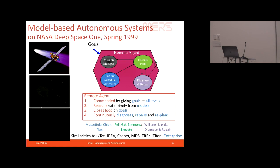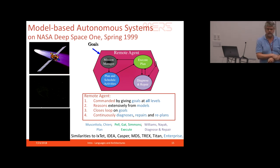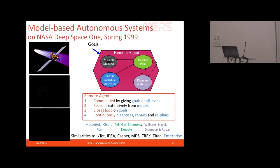Remote Agent used extensive formal models and closed the loop on goals, continuing to diagnose and repair. It ran on only 20 MHz of processor, with 2 MHz for diagnosis and about 40% for the planner. Because computational power was limited and the planning problem involving time and resources was very difficult, many domain-dependent heuristics were pre-programmed by engineers. Fast-forward 20 years and planning algorithms have become dramatically better, able to generate plans without pre-programmed heuristics.